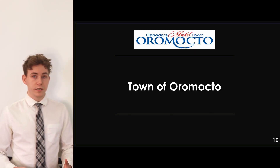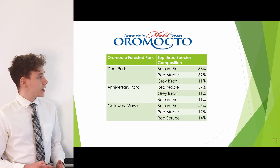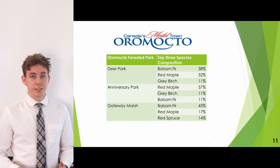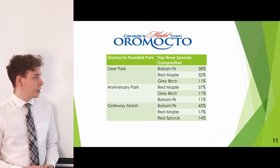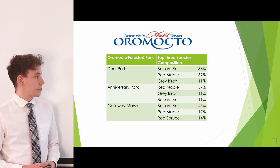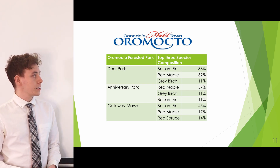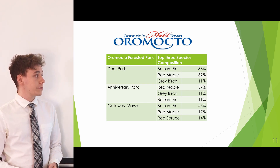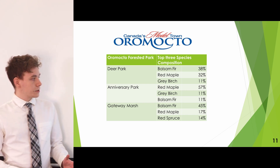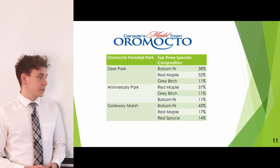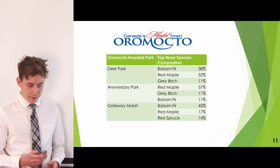We'd like to begin with the results from the town of Oromocto, starting with a brief refresher on our initial inventory. We surveyed three parks: Deer Park, Anniversary Park, and Gateway Marsh. Deer Park was primarily balsam fir, red maple, and grey birch. Anniversary Park was primarily red maple, grey birch, and balsam fir. Gateway Marsh was balsam fir, red maple, and red spruce.